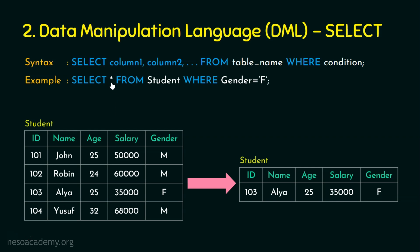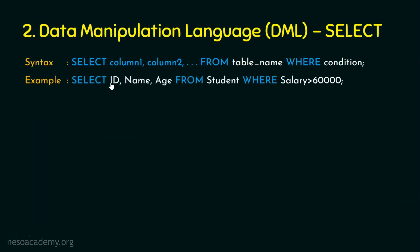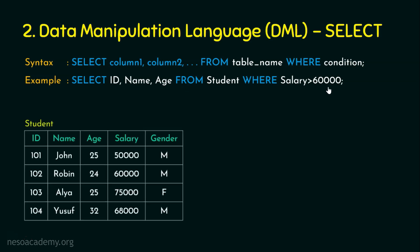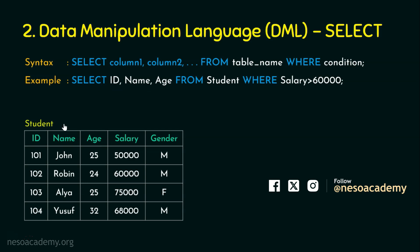From this, we understand that asterisk represents all columns. Suppose we want specific columns — say SELECT id, name, age FROM student WHERE salary > 60000. Comparing this query with the student table, we are selecting only three columns: id, name and age, even though the original table may have many columns. We also specified a condition: salary greater than 60000.